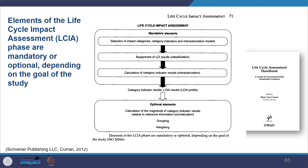A life cycle impact assessment process from the Life Cycle Assessment Handbook shows mandatory elements including: selection of impact categories, category indicators, characterization models, assignment of life cycle impact results, classification, calculation of category indicator results, and then grouping and weighting. When you classify impacts you see whether they fall into very high impact or low impact categories, and what weightage you assign to each type of impact occurring.